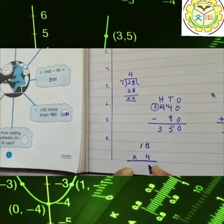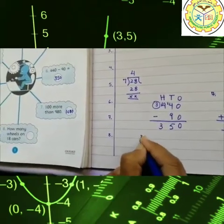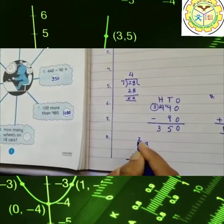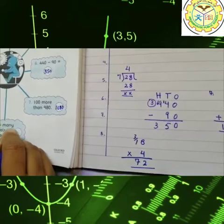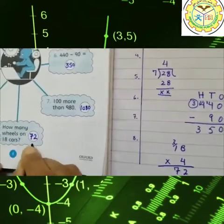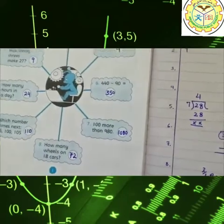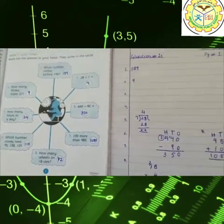Four eights are 32. Two and three is here. Four ones are four and three is equal to seven. Our answer is 72. So 72 is our answer of the question number eight. Okay class, page number one is completed. Allah Hafiz.